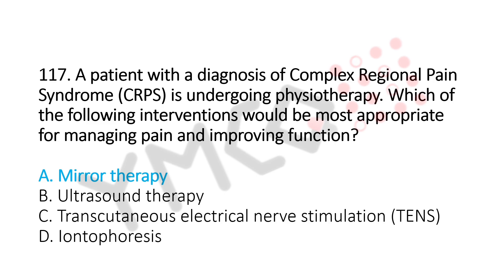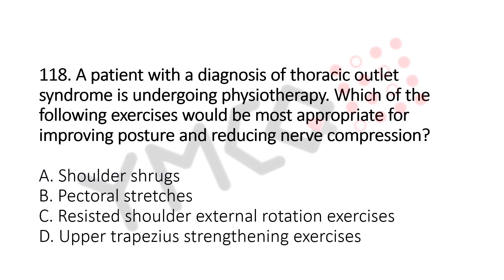Now let's move to question number 118. A patient with a diagnosis of thoracic outlet syndrome is undergoing physiotherapy. Which of the following exercises would be the most appropriate for improving posture and reducing nerve compression? Option A, shoulder strengthening. Option B, pectoral stretches. Option C, resisted shoulder external rotation exercises. Option D, upper trapezius strengthening exercises. And the answer is Option B, pectoral stretches.